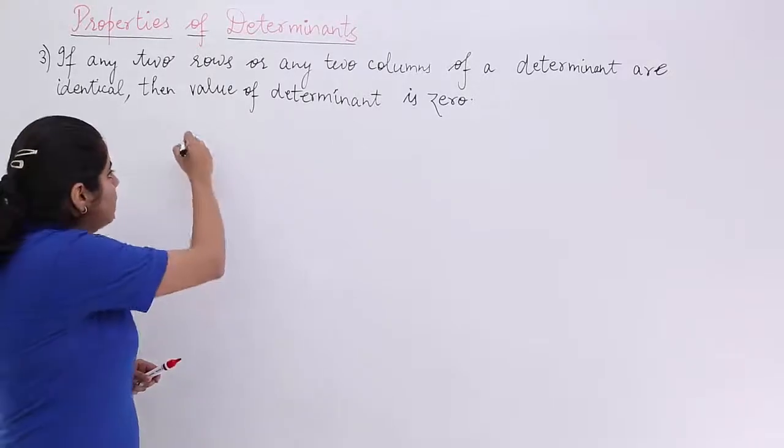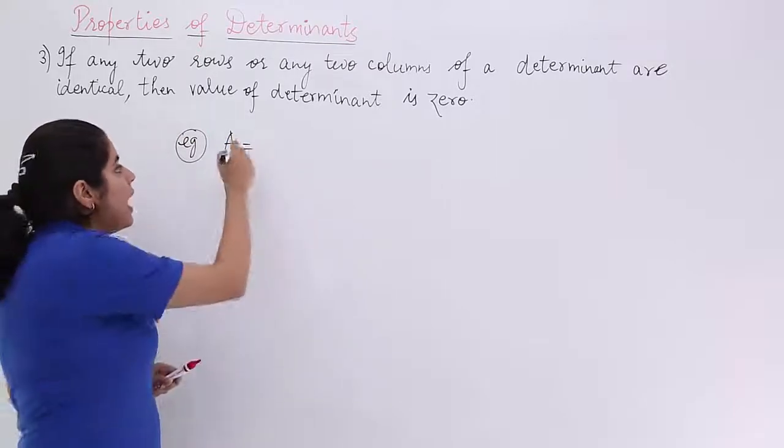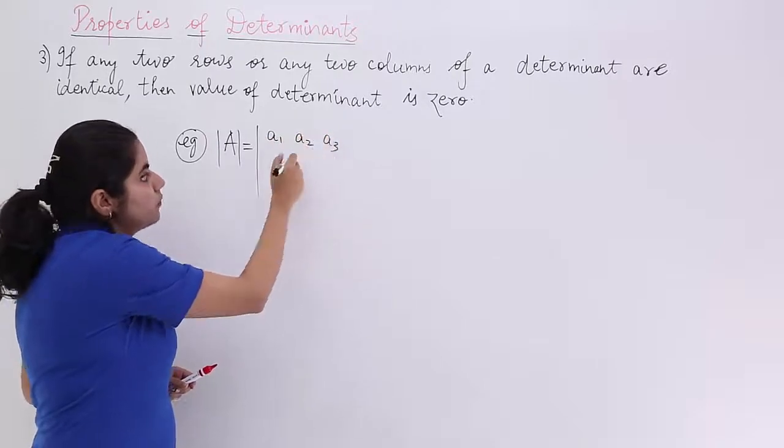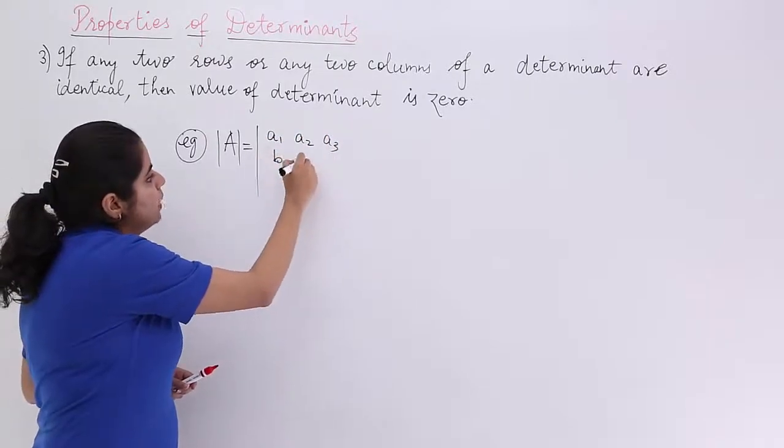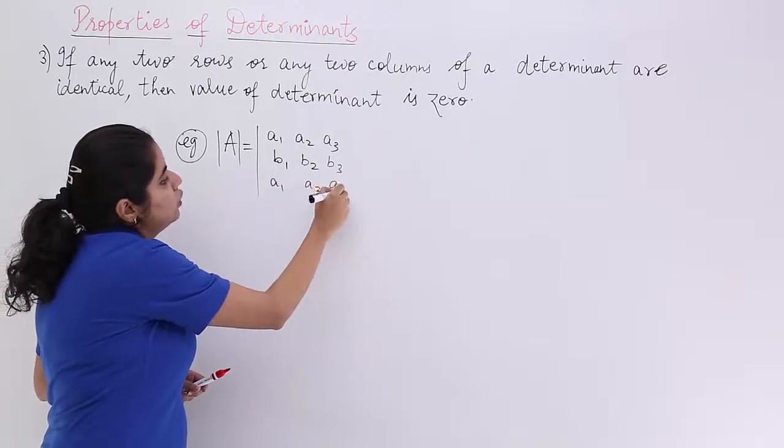Let's see what do we mean by that. It means that I have a determinant A and it is said that the determinant is such that a1, a2, a3, b1, b2, b3 and again suppose I have a1, a2, a3.